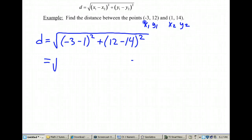Let's simplify. So simplifying, we have to first attack what's inside the parentheses. So negative 3 minus 1 is negative 4. And inside the other set of parentheses, 12 minus 14, we have negative 2. And that's what I've got so far.